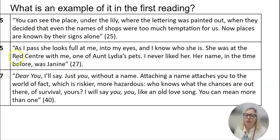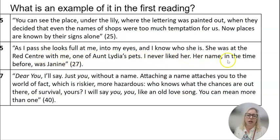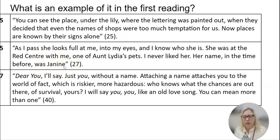Chapter five, there's another one: 'As I pass, she looks full at me into my eyes and I know who she is. She was at the Red Center with me, one of Aunt Lydia's pets. I never liked her. Her name in the time before was Janine.' So here is the old name — we're hearing about the name from the time before — and her new name is Ofwarren.